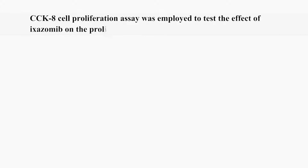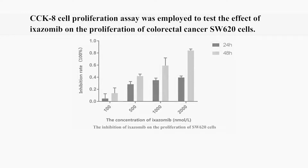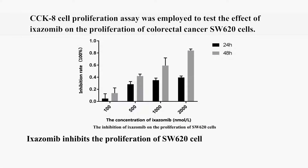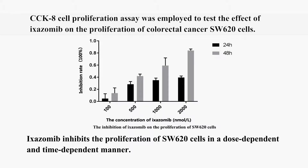Firstly, we used CCK8 cell proliferation assay to test the effect of exosomib on the proliferation of colorectal cancer SW620 cells. According to the results, the inhibition rate gradually increased with increase of concentration and treatment time of exosomib, indicating that exosomib inhibits the proliferation of SW620 cells in a dose-dependent and time-dependent manner.